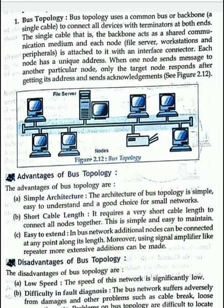This topology is basically about how computers are connected via wire. The transmission media is connected via wire. If it is a small network, it will be connected via wire. If it is a large network, we cannot do a via-wire connection. So this topology is also called LAN topology.